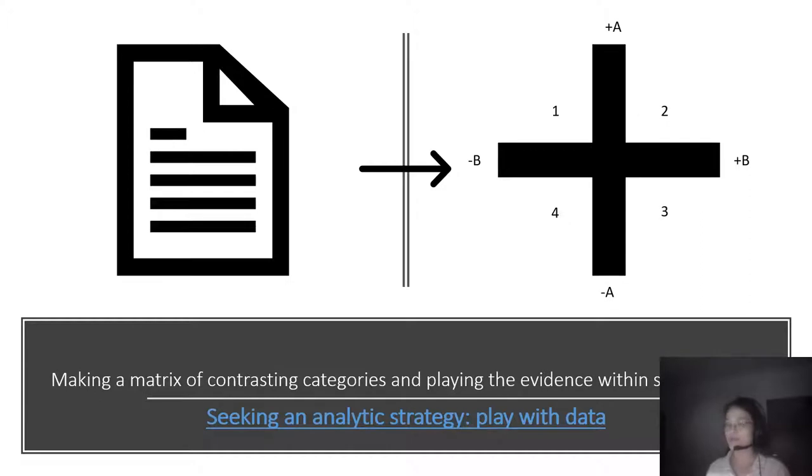A third way is to construct a matrix of contrasting categories and place different evidences within such a matrix. As you can see from the right side of the presentation, we have this four zones of categories division. You can again allocate different contents from your interview transcript into different zones of this matrix.